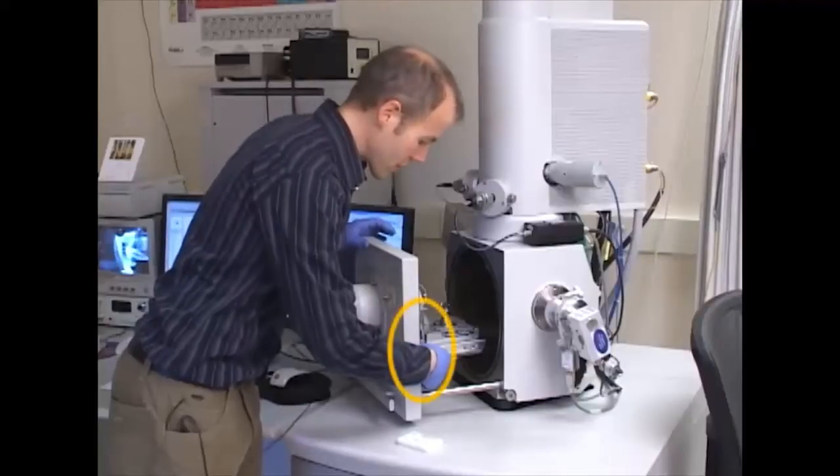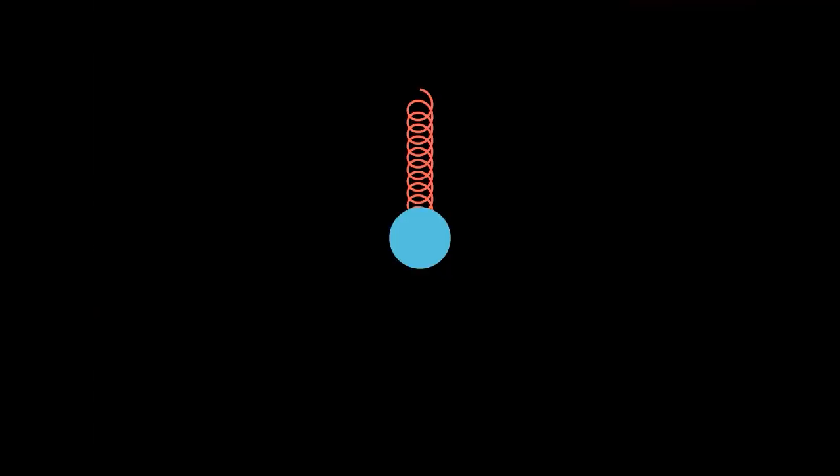If we want to understand superconducting qubits, the first thing that we have to understand is a ball on a spring. No, seriously, I'm not kidding. Just bear with me here. If we look at a ball on a spring, we notice something very quickly about the motion. The ball moves back and forth on the spring in a nice repeatable pattern at a specific frequency. The motion is periodic.